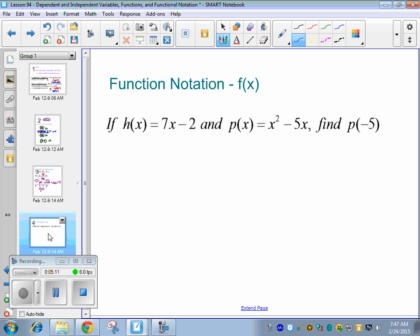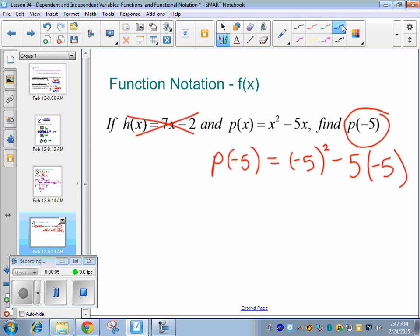So if h(x) equals 7x minus 2 and p(x) equals x squared minus 5x, find p(-5). So they kind of trick you on this one. If you're looking for p(-5), you only plug it into one of those equations. Which one do you think we're going to plug it into? Yeah. The p equation. So this h(x) is like unnecessary for this problem, because it's h. So if it's p(x), plug it into the p equation. So what I want to do is I want to find p(-5). So all I'm doing is plugging this negative five in for x. And then on the right hand side I'm going to do the same thing. I'm going to plug in negative five for x and another negative five for x.